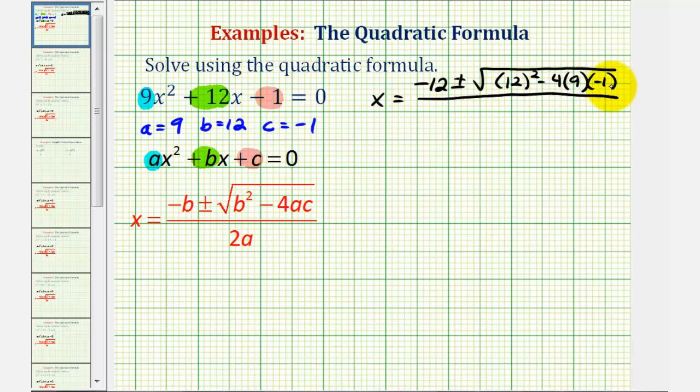All of this is divided by two times a, or in this case, two times nine. Notice for the first step, we didn't do any simplifying, we just performed the substitution.